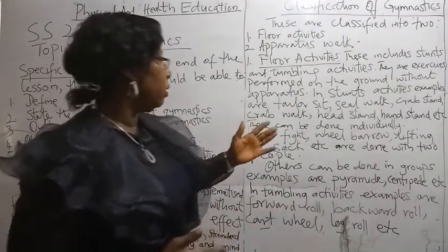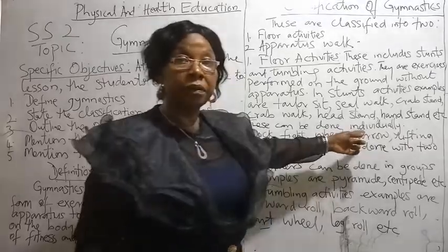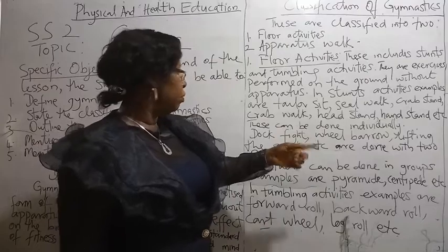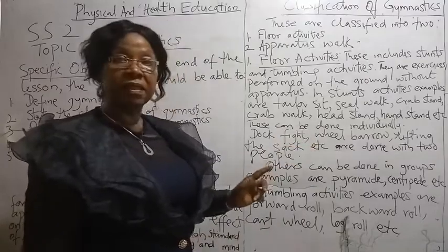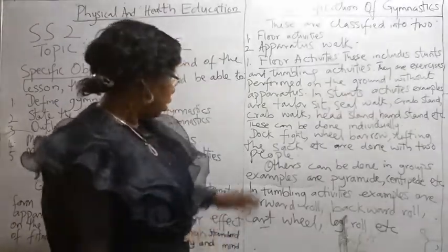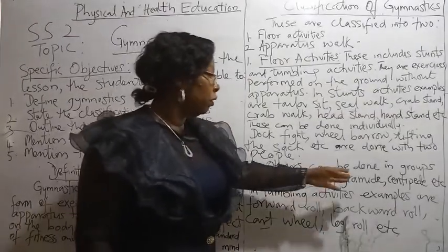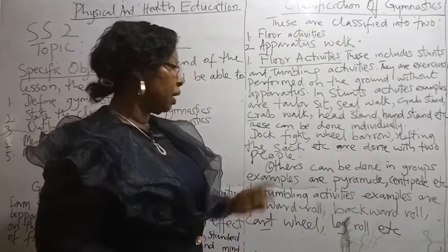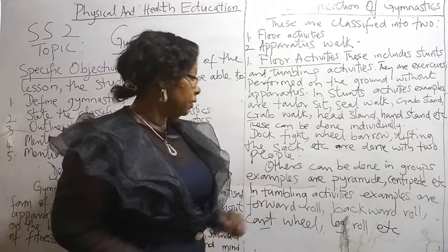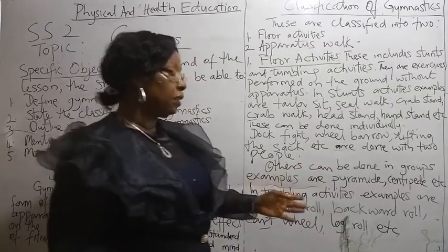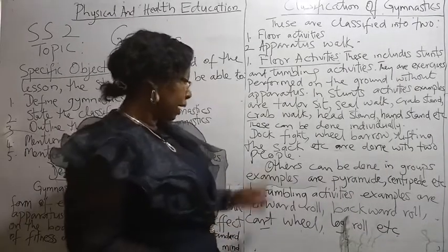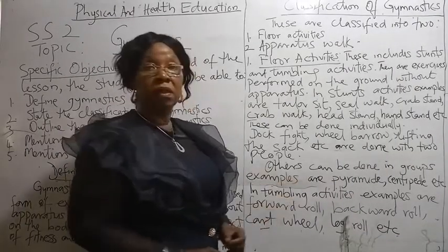Stance activities can be done individually. Some are done with two people — examples are dog fights, wheelbarrow, lifting the stack, etc. Others can be done in groups, examples are pyramid, centipede, etc. Tumbling activities include: forward roll, backward roll, cartwheel, log roll, etc.